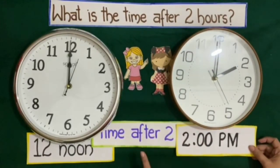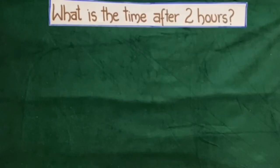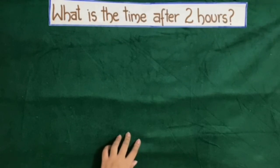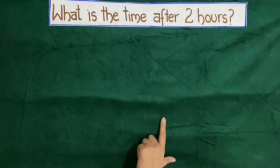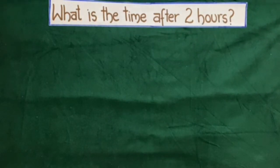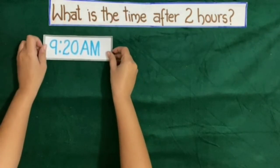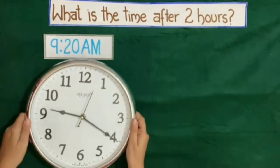So circus finished at 2 PM — time after 2 hours was 2 PM. Now with the help of this activity we have learned how to find time after 2 hours. Now we will solve some questions from our mathematics book. The time given is 9:20 AM, and we have to find the time after 2 hours.